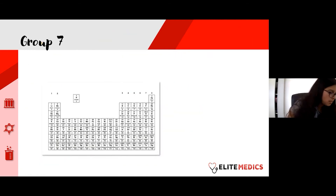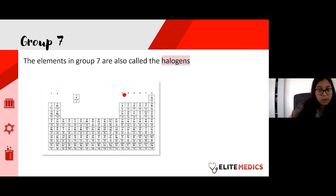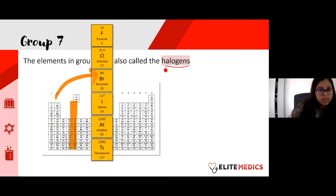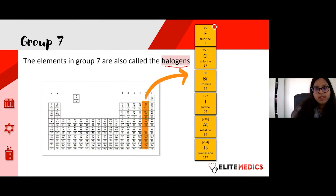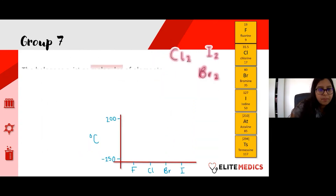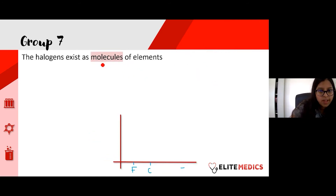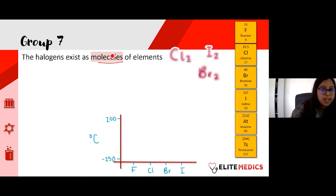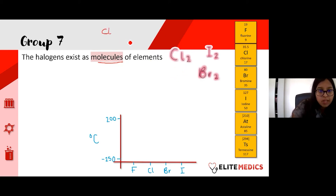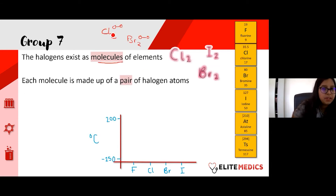That's group one done. Now onto group seven — we call these the halogens. Halogens exist as molecules: you'll never find chlorine just as a single chlorine atom, or bromine just as Br. They always exist as molecules — pairs of atoms bound together. Each molecule is made up of a pair of atoms.